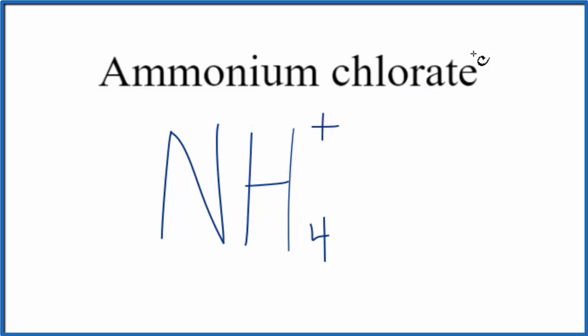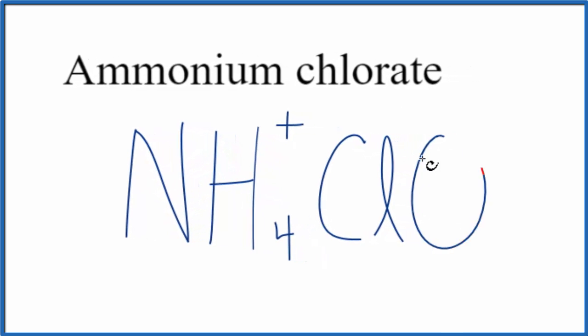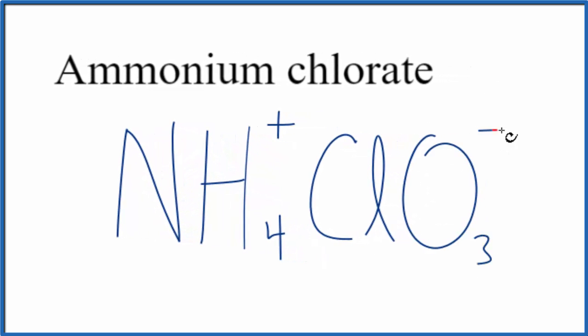The chlorate ion here, this ATE, this alerts you to the fact this is a polyatomic ion. The chlorate ion, you either have it memorized, that it's ClO3, it has a one minus ionic charge, or if you're allowed again you can look this up.